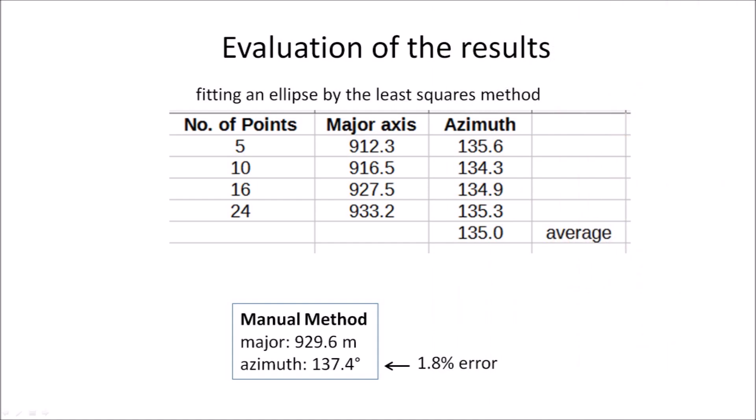The value of the azimuth was consistent when fitting an ellipse by the least squares method. This means that the orientation of the ellipse remained fairly constant regardless of the number of points. The azimuth of 137.4 degrees estimated manually has an error of 1.8 percent. The length of the major axis became more accurate as the number of points increased. The average of the major axis calculated with 16 and 24 points is close to what was measured by the manual method.